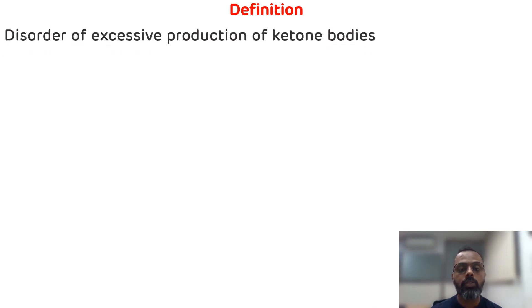So first, definition of ketosis. Ketosis is a metabolic disorder which is characterized by excessive production of ketone bodies. There are three ketone bodies: acetone, acetoacetate, and beta-hydroxybutyrate.